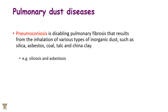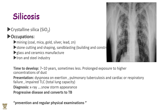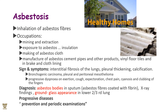Pneumoconiosis is a disabling pulmonary fibrosis resulting from inhalation of various types of inorganic dust such as silica, asbestos, coal, talc, and china clay. Silicosis is caused by crystalline silica (silicon dioxide). Occupations at risk include mining, stone cutting, shaping, glass and ceramic manufacturing, and the iron and steel industry — it affects your lungs. It may take approximately a decade or more to develop with prolonged exposure to high dust concentrations. Presentations include dyspnea on exertion, pulmonary TB, and cardiac or respiratory failure, with impaired total lung capacity. Diagnosis is by X-ray showing snowstorm appearances. It is a progressive disease and can convert to tuberculosis. Prevention and regular physical examination are the main interventions.